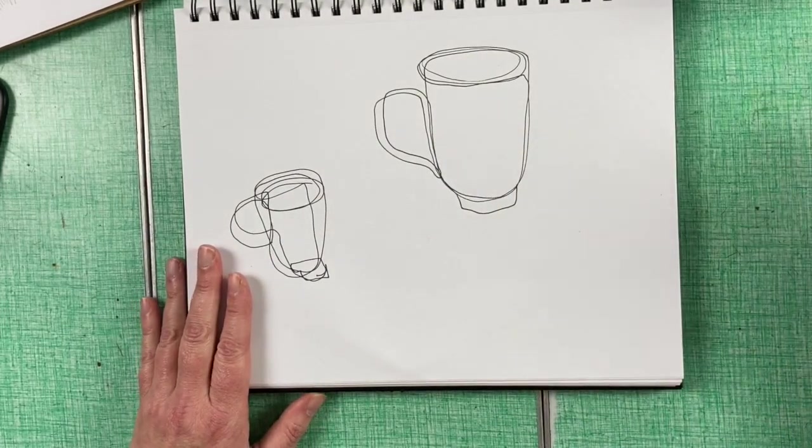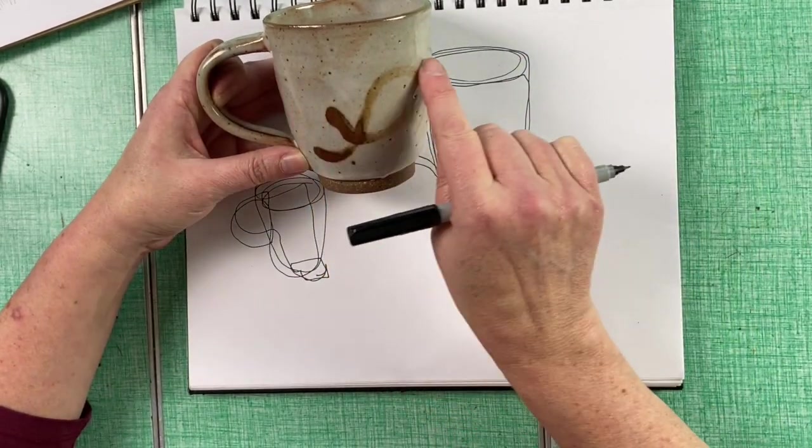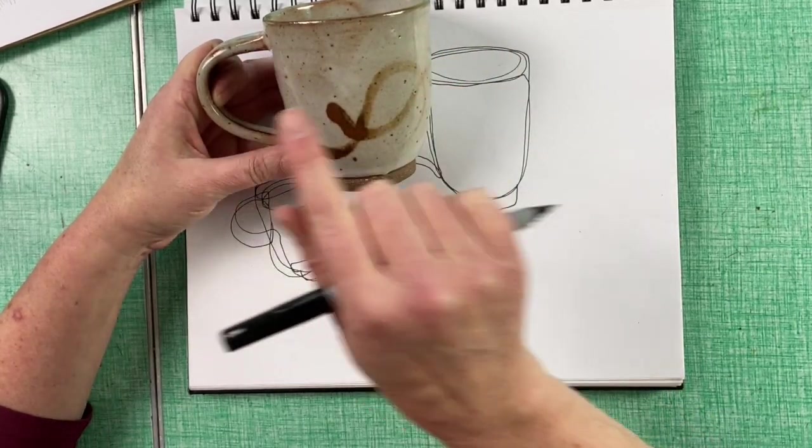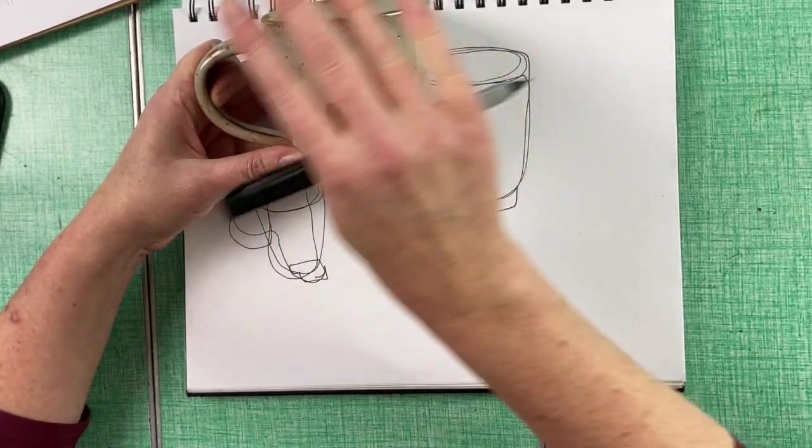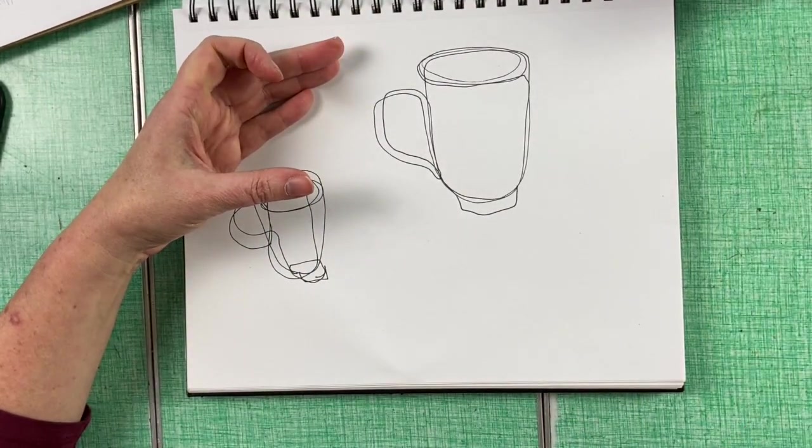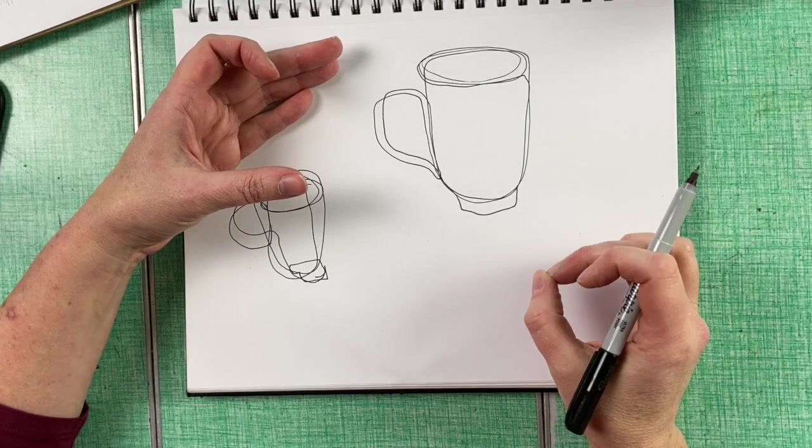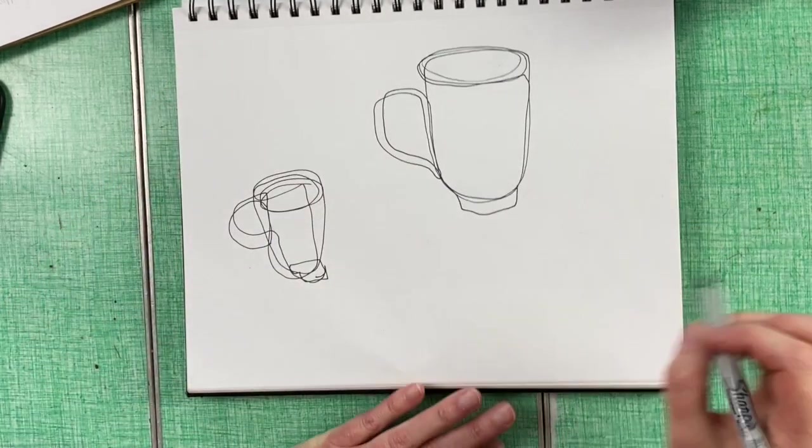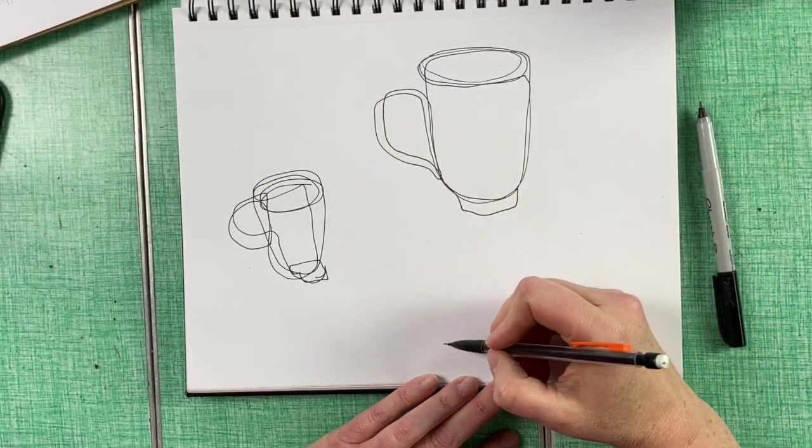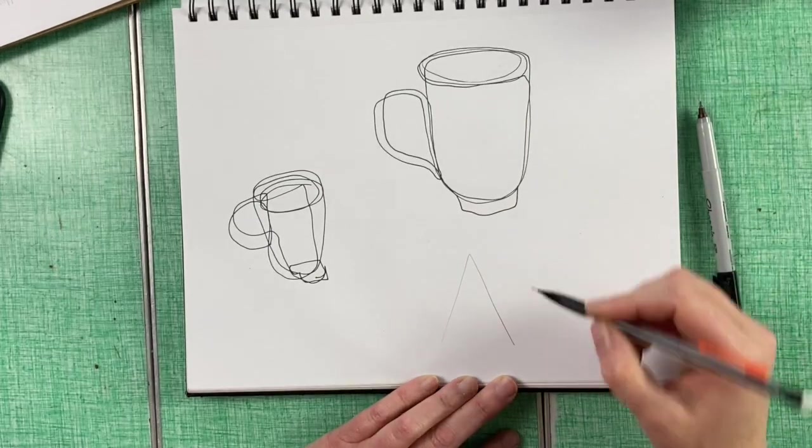Another form of line is called a cross contour. And these are the lines that describe not the outer edge, but the contour of the volume of the mass. I'm going to step aside from my mug for just a second and show you an example with a different shape. So I'm going to take out my pencil. And I'm going to draw two triangles, just the top half of the triangle probably.